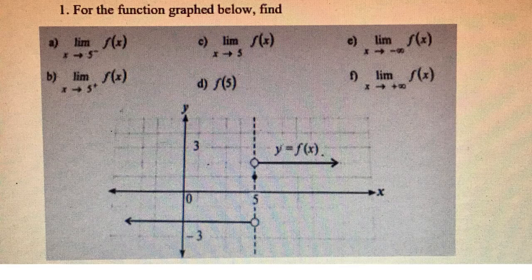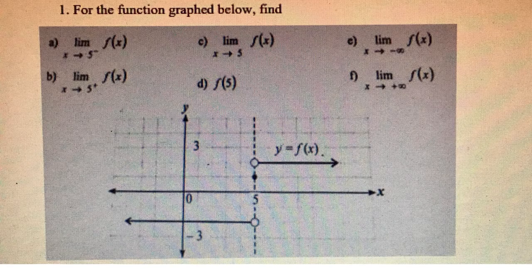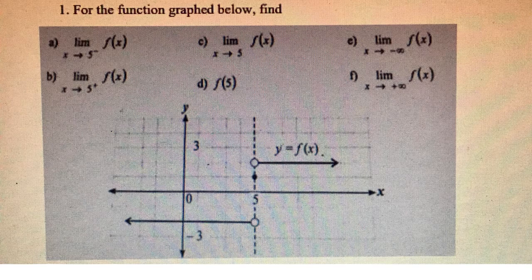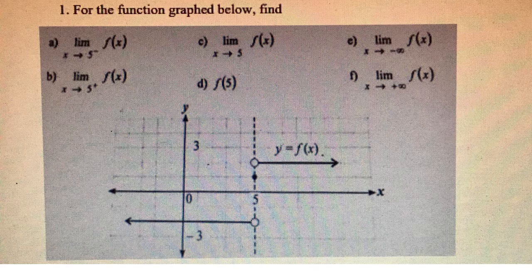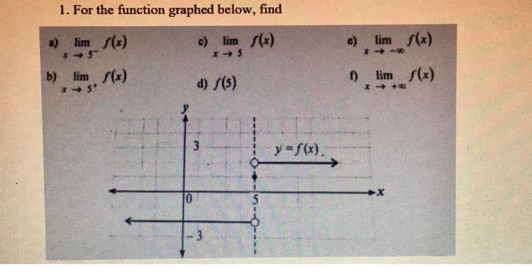For the function graphed below, we want to find first the limit as x approaches 5 from the left of f of x. So here's x equals 5. We're approaching it from the left, which is over here. As we're approaching it from the left, we see that we approach this circle here, which is at y equals negative 2.